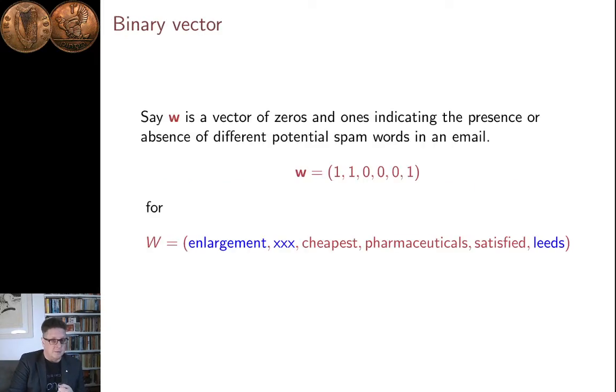So, there are lots of legitimate uses of these suspect words, and what we want to spot is the combinations that are indicative of spam. And so, imagine encoding the words in some sort of binary vector. The little w here has 1s when the word is present. So, this 1 here shows that this email has enlargement in it. This email has XXX in it. It doesn't have cheapest, pharmaceuticals or satisfied, but it does have leads. And the question is, is this email containing these three words and not those other three words an email that is likely enough to be spam for it to be put into the spam folder rather than the inbox.